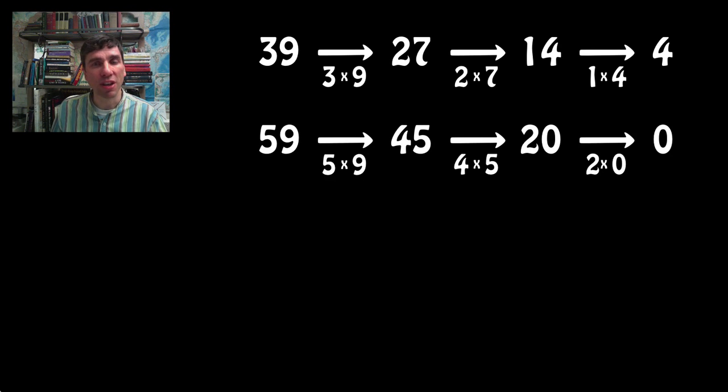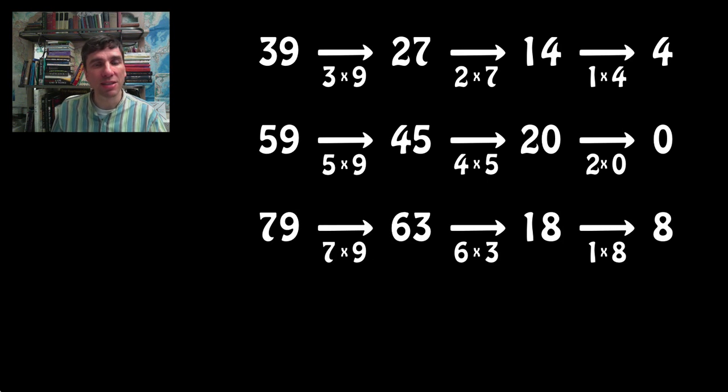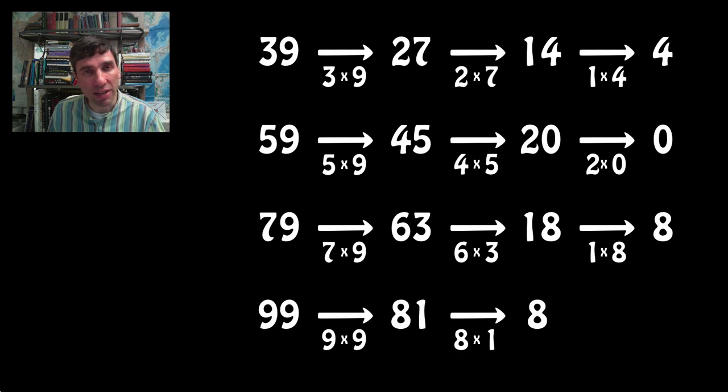Let's look at other numbers. 59, also multiplicative persistence of 3. 79, also multiplicative persistence of 3. Is it always true that the larger numbers have got a higher multiplicative persistence? No. You can try it out. Let's say 99. That only has a multiplicative persistence of 2.